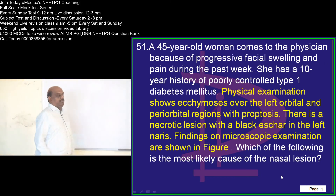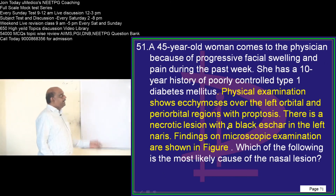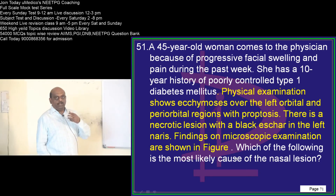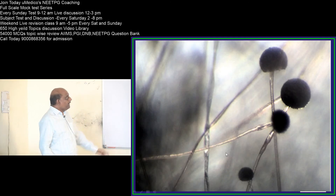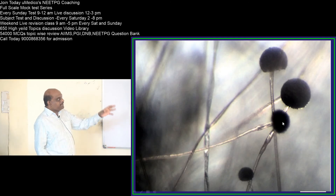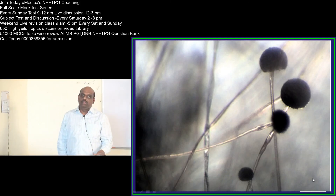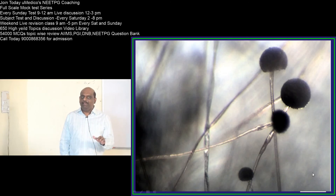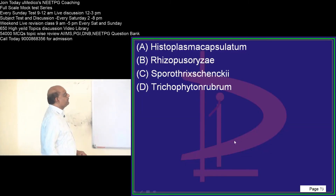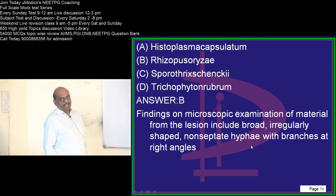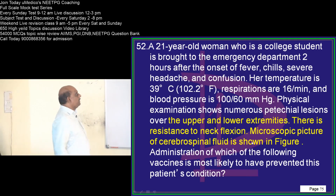A 45-year-old presents with ecchymoses in the left orbital and periorbital area along with proptosis. Microbiological examination shows branching hyphae which are broad-based — typically characteristic of Rhizopus or Rhizomucor, which you need to remember.